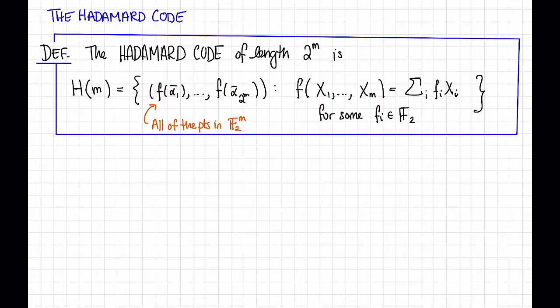So that is f(x₁, x₂, ..., xₘ) is just the inner product of some vector with coefficients fᵢ and the xᵢ's. That is, it is the sum from i equals 1 to m of fᵢ times xᵢ.